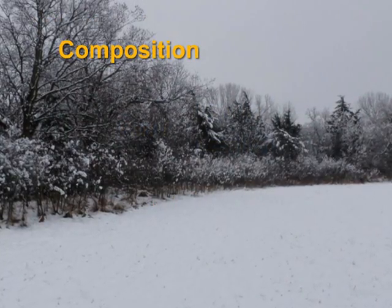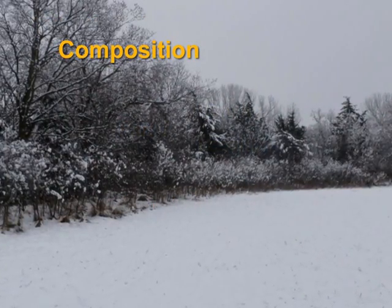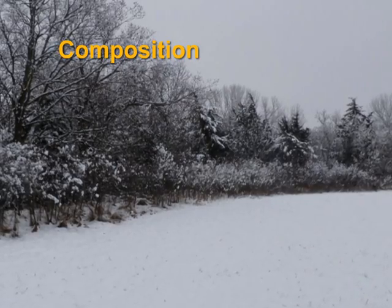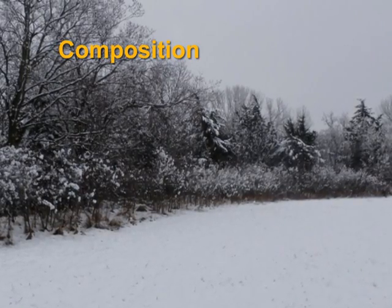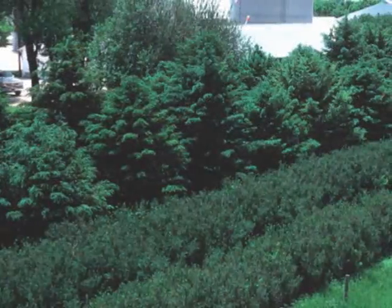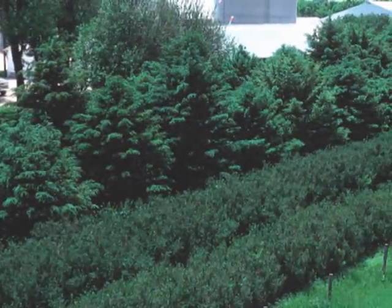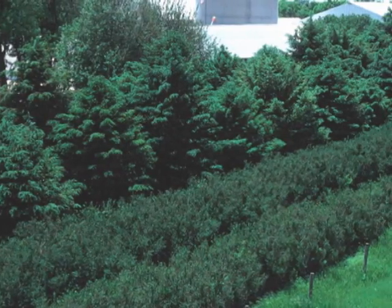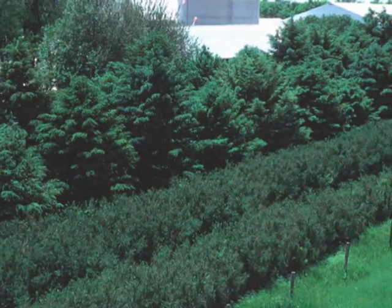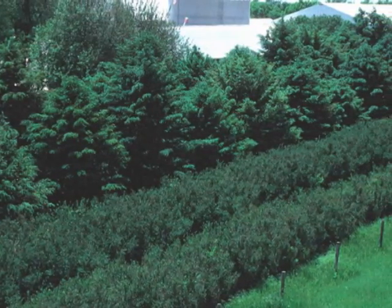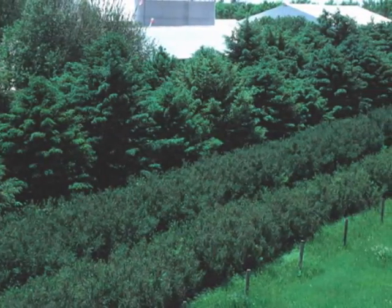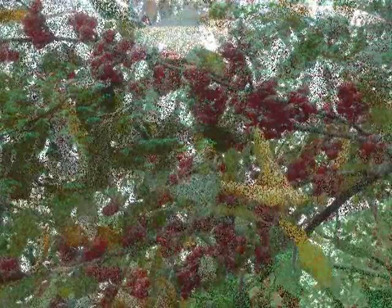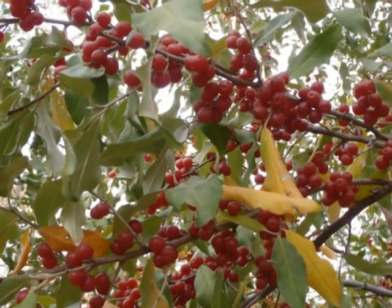A third aspect of windbreak design is composition. The number of rows in a windbreak depends on its purpose and the available space. Most windbreaks have at least two rows of trees or shrubs. Typical windbreak components include dense conifers to reduce wind velocity, tall broadly forked coniferous trees to extend the area of protection, and low-growing dense trees or shrubs to influence snow deposition, provide wildlife habitat, and add aesthetic value.